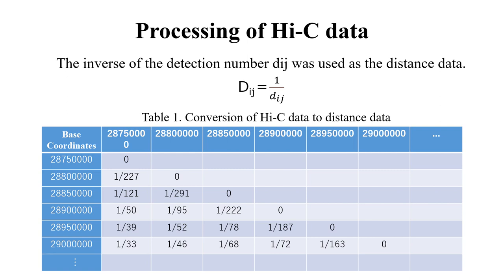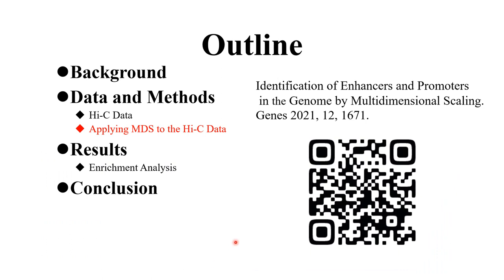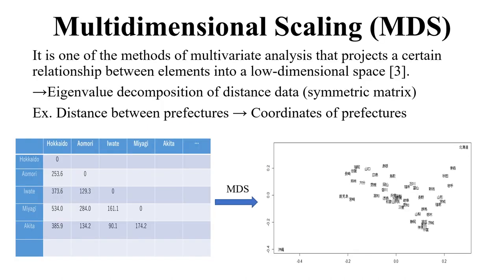Furthermore, MDS deals with a distance matrix. Therefore, we use the inverse of the Hi-C data as a distance matrix. Next, applying MDS to the Hi-C data: MDS looks difficult at first glance, but it is simply a way to reproduce the original coordinates from a distance matrix. For example, this is a reproduction of the Japanese map from distance data between prefectures in Japan — and it is very accurate. This is MDS.